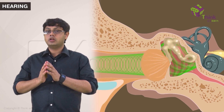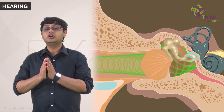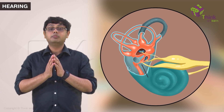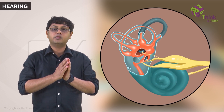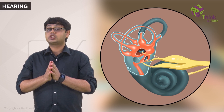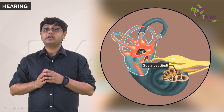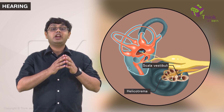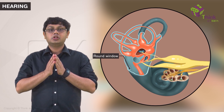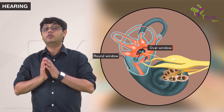Moving on. The foot of the stapes covers the oval window, which is the connection with the perilymph-filled vestibule. The rocking motion of the stapes over the oval window causes pressure waves in the perilymph fluid. This gets transmitted to the cochlea through the scala vestibuli. The fluid moves up the spirals to the helicotrema, where it moves into the scala tympani and descends to reach the round window. The round window then moves in the opposite direction of the oval window.